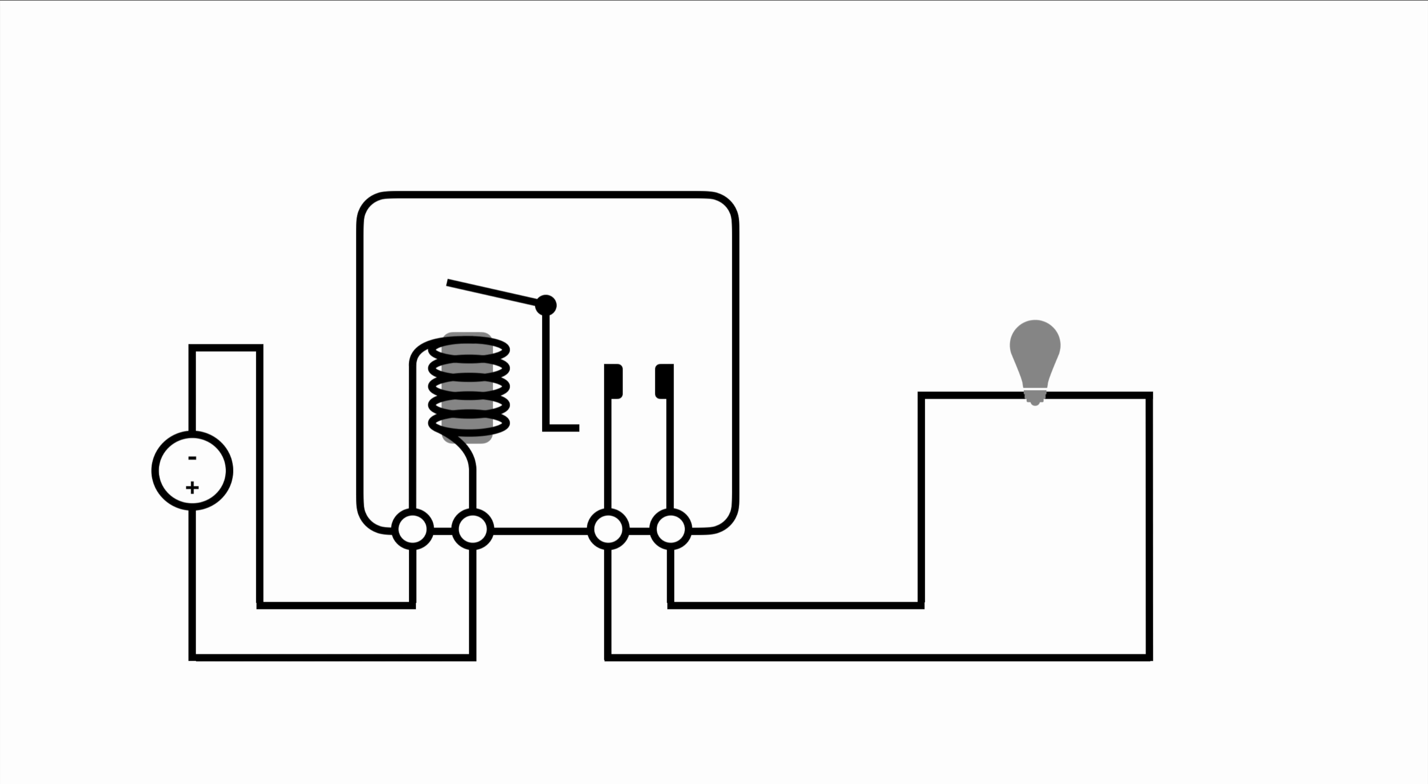So let's engage the activation circuit and watch the electrons flow through the coil. The magnetic field gets built and the circuit for the load is closed and obviously the light bulb will light up. So that's how a relay works on the inside and how it's supposed to work.